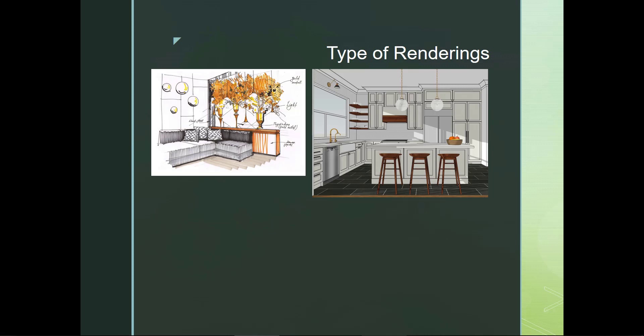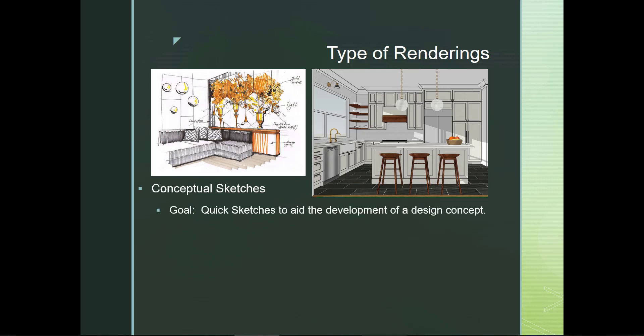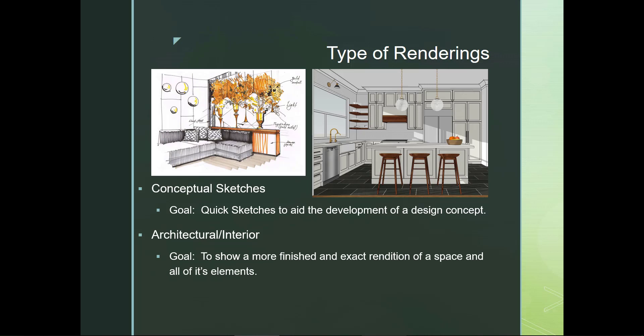Style is different from type. There are a few different types of renderings. There are conceptual sketches — basically quick sketches to aid the development of a design concept. It's something to get your idea out; it's nowhere near finished or ready to be presented as finished. It's how to get your imagination, concept, and research out onto paper. There are also architectural or interior renderings, whose goal is to show a more finished and exact rendition of a space and all of its elements, representing what the final product is actually going to be.